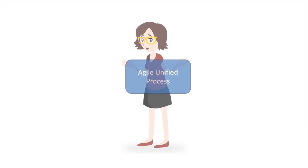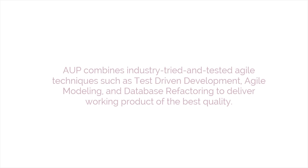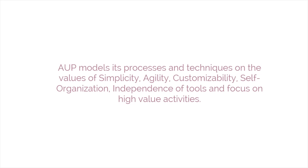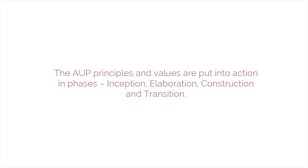The eighth method is Agile Unified Process. AUP is a simplified version of IBM's Rational Unified Process and was developed by Scott Ambler. AUP combines industry-tried and tested Agile techniques such as test-driven development, Agile modeling, and database refactoring to deliver working products of the best quality. AUP models its processes and techniques on the values of simplicity, agility, customizability, self-organization, independence of tools, and focus on high-value activities. The AUP principles and values are put into action in phases: inception, elaboration, construction, and transition.